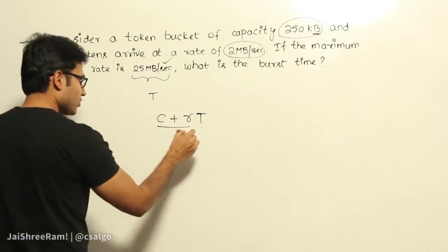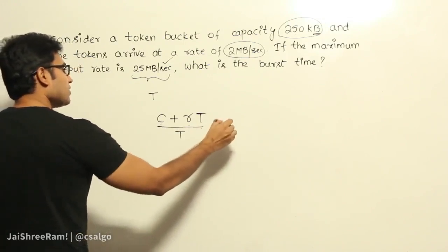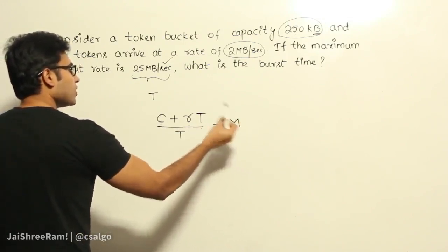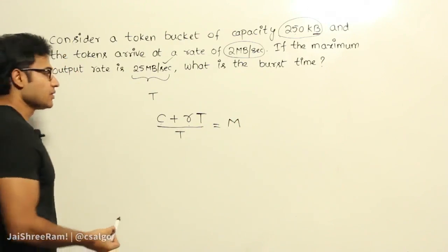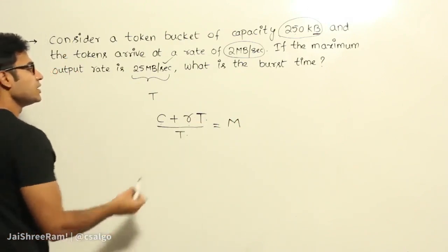Then how many bytes could you send out in one second? This is the time. Now, this is equal to the maximum rate which we are going to get. Got it? So now they are asking what this T could be. So how to find out the T?